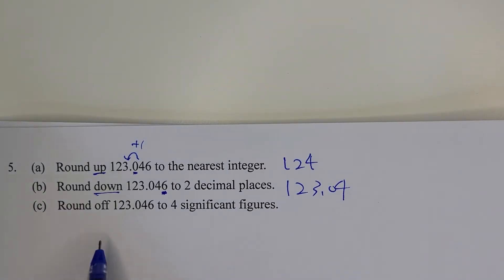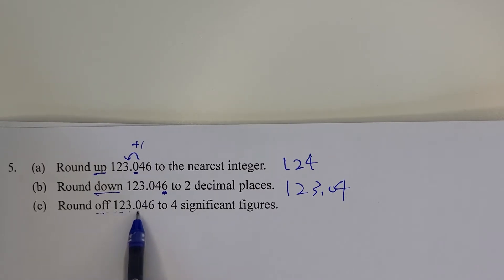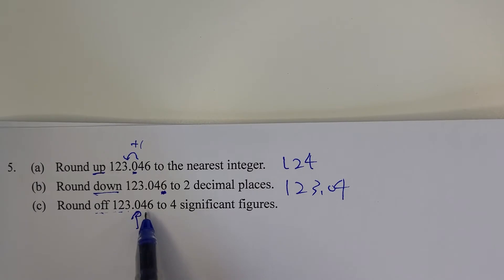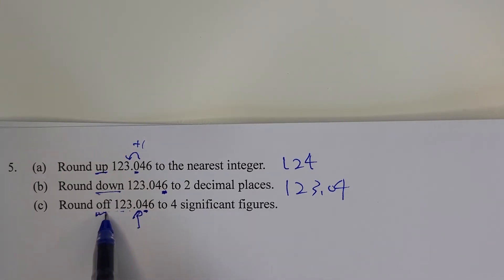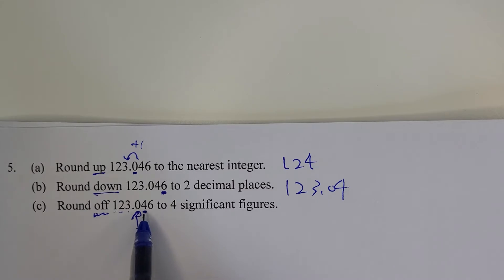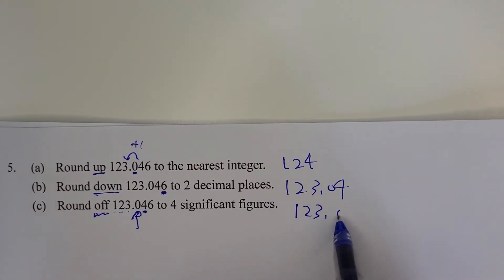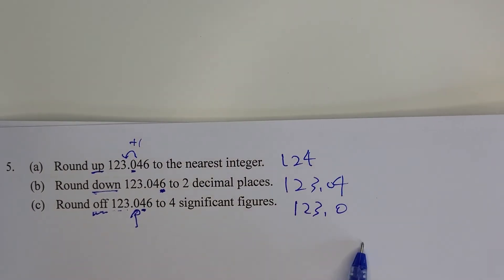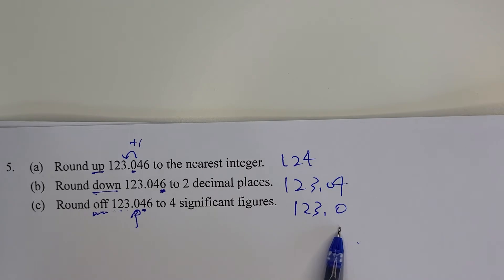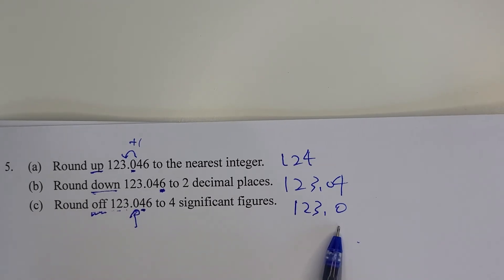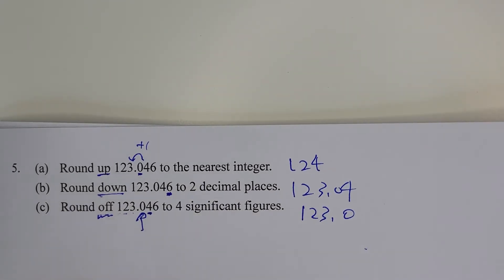Part c: run off the number to four significant figures. Count 1, 2, 3, 4 — the fourth significant figure is identified. Look at the fifth significant figure; since you are running off and the digit is less than 5, you do not round up. The final answer is 123.0 — you must include the trailing zero because you are expressing four significant figures.